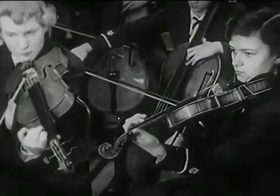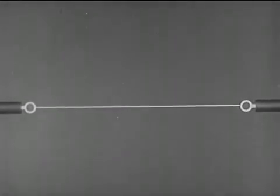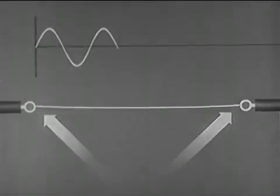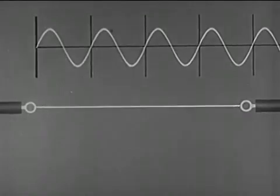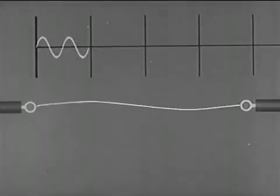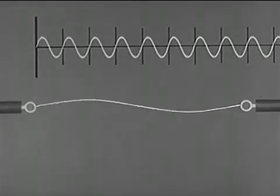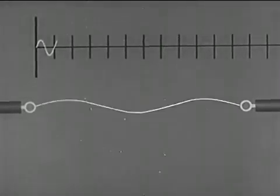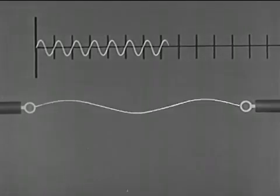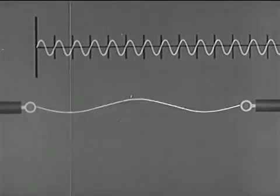Each vibrating string may be made to produce different tones. Let us observe this string. There is no motion at the endpoints or nodes. The string vibrates along its full length and produces its longest possible wavelength — this is the lowest or fundamental frequency of the string, sometimes called the first partial. If the string vibrates in two segments, it produces a wavelength that is one half that of the fundamental; this is the first overtone, also called the second partial. Since wavelength is inversely proportional to frequency, the frequency of the first overtone is twice that of the fundamental. When the string vibrates in three segments, it produces its second overtone, the third partial, where the frequency is three times that of the fundamental.